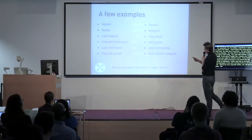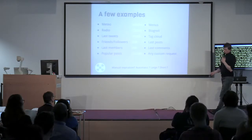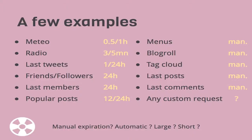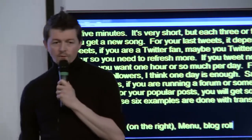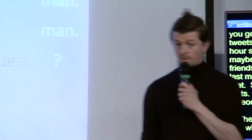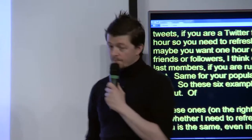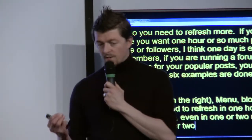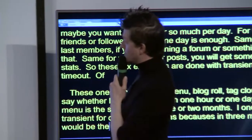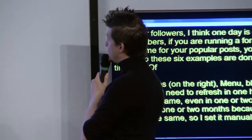Those six examples are done with transients with timeout. But for your menu, your blogroll, your tag cloud - I can't say I need to refresh in one hour or one day. My menu will be the same even in one or two months. I won't set my transient for two months because in three months it will be the same. So I have to do it manually.